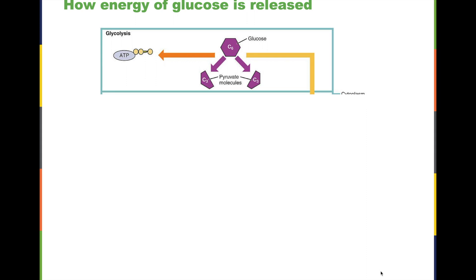The first stage involves breaking down this six-carbon molecule of glucose into two three-carbon molecules of pyruvate. This step is called glycolysis. We're splitting this molecule and making it smaller, into two separate smaller molecules that are exactly the same, and during the process we also make some ATP.